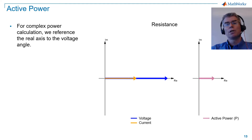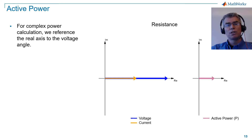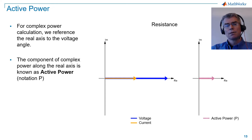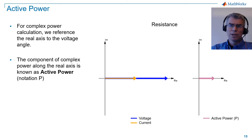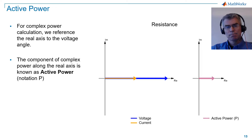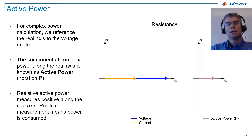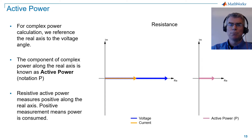Let's start with looking at complex power of a resistor. For the complex power calculation, we reference the real axis to the voltage angle. The component of complex power along the real axis is known as active power, notation P. Resistive active power measures positive along the real axis, and a positive measurement means power is consumed.